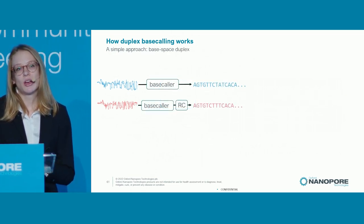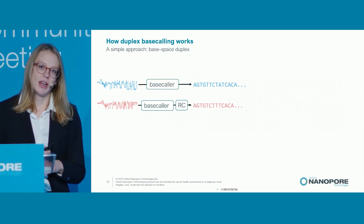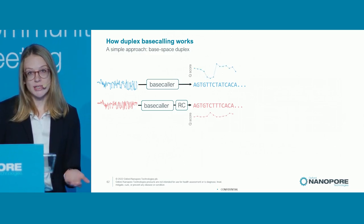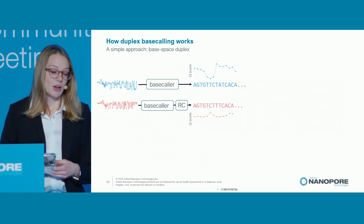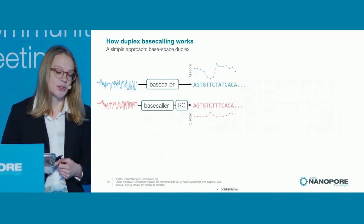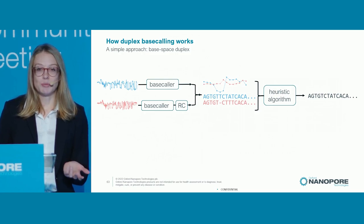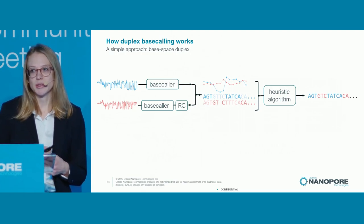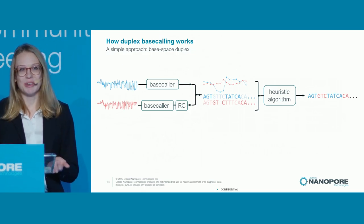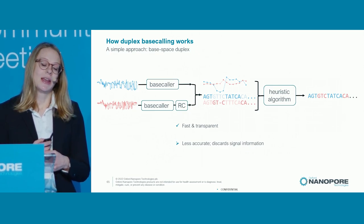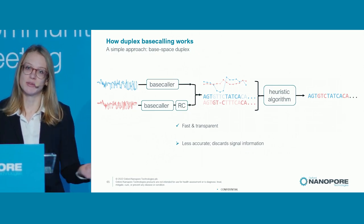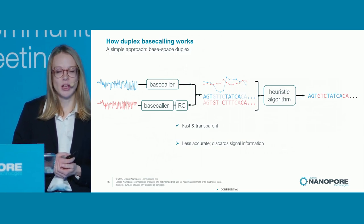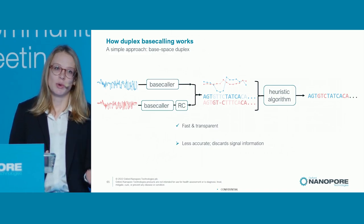A simpler approach is to base call both strands individually and then work entirely in sequence space or base space. I'm showing the output of those two individual base calls — sequences and per-base quality scores, or Q scores. We perform a reverse complement operation on the complement sequence so we can align the two sequences together, then use a simple heuristic algorithm to step through the sequence and at each base choose between template and complement according to their quality scores to produce one output sequence. This method is extremely simple, transparent, and can be very fast since it works in sequence space, which is very compressed relative to signal space. Unfortunately, that means we've discarded a lot of information from the original signals, so there are limitations in the accuracy achievable with base space methods.